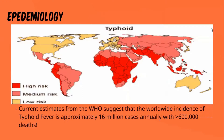This map shows the incidence of typhoid fever — the dark red colors indicate the highest incidence, including Africa, India, Southeast Asia, and Central Asia. Current estimates from the World Health Organization suggest that the worldwide incidence of typhoid fever is approximately 15 to 16 million cases annually, with more than 600,000 deaths.